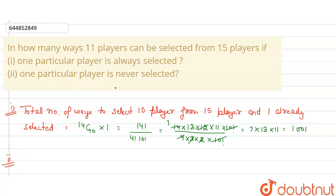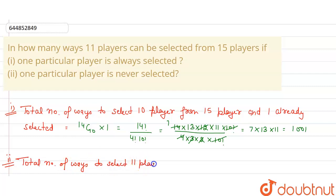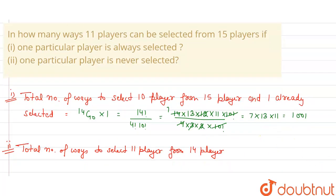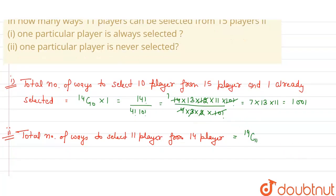Now the second question: one particular player is never selected. So from the 15 players, one player will never be selected, meaning our choices are 14, and we have to select 11 players. So total number of ways to select 11 players from 14 players.